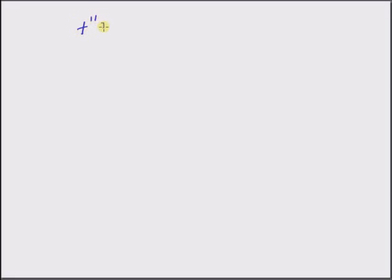Hello, welcome. In this short video let us look at the relationship between the second derivative of a function f of x and the convexity of that function. Formally we want to prove that if the second derivative is non-negative, then the function f of x is a convex function. That is, if the second derivative is non-negative, it implies that f of x is a convex function.